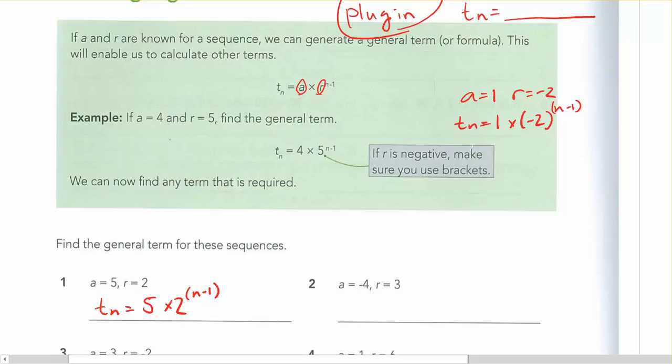That is just setting this up with a general term that anybody could use if they wanted to find a particular term in the sequence. Here we've got tn equals negative 4 times 3 to the power of n minus 1.